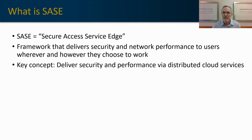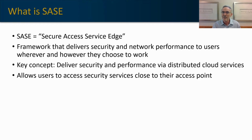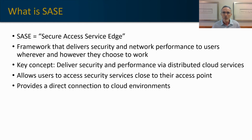The key concept of SASE is that it delivers security and performance via a distributed cloud architecture. It allows users to access security services close to their access point. So if I have workers in Austin, Texas, and my main security stack is in Minneapolis, do I want to send my Austin workers to Minneapolis to get a security treatment and then send them back out to cloud services they're trying to access in Palo Alto, California? Probably not — that's a really inefficient network route. I want those users to access the security platform as close to where they are so they can make a direct link to the workflow or work product they're trying to access somewhere else in the cloud.